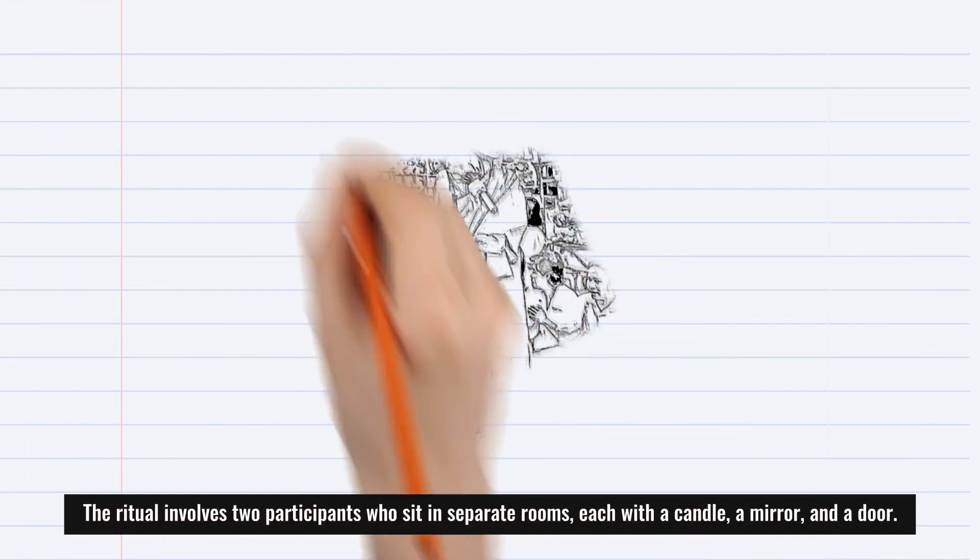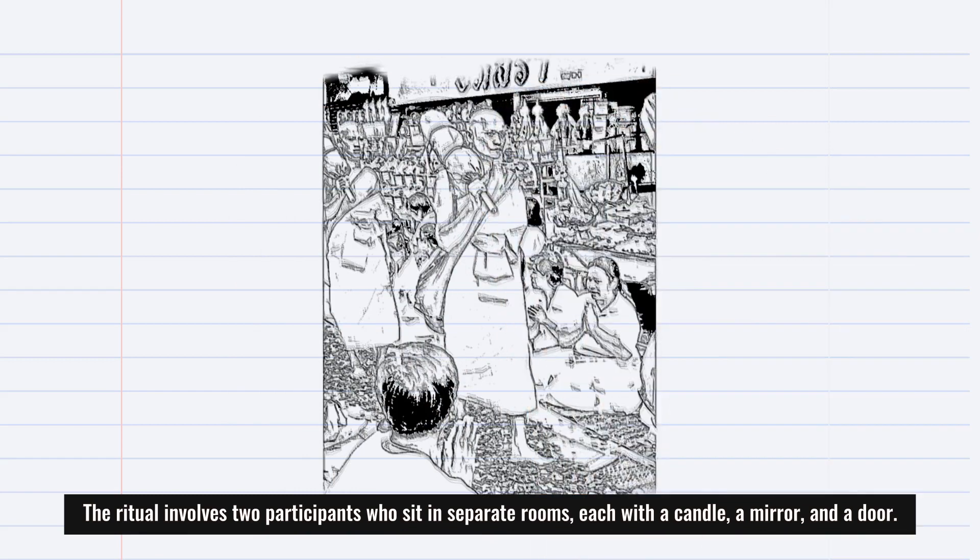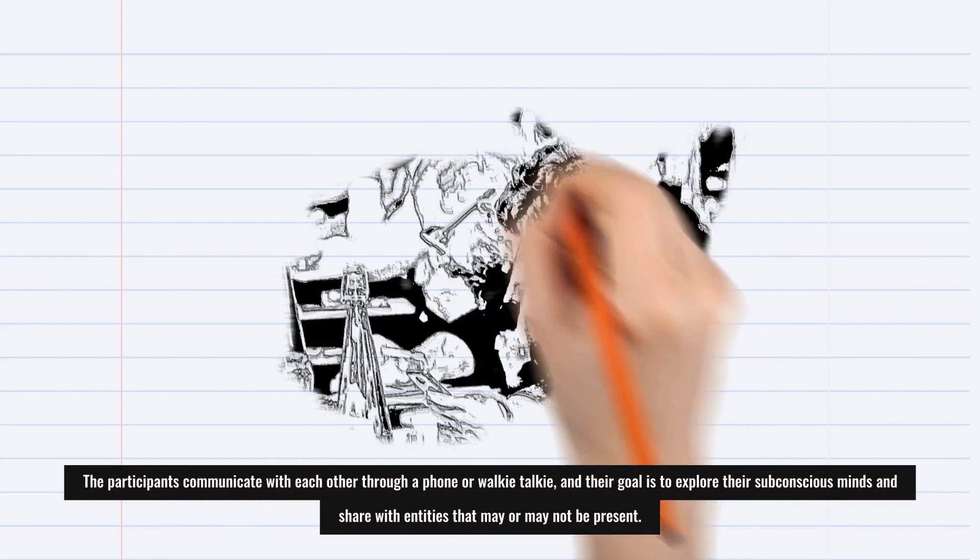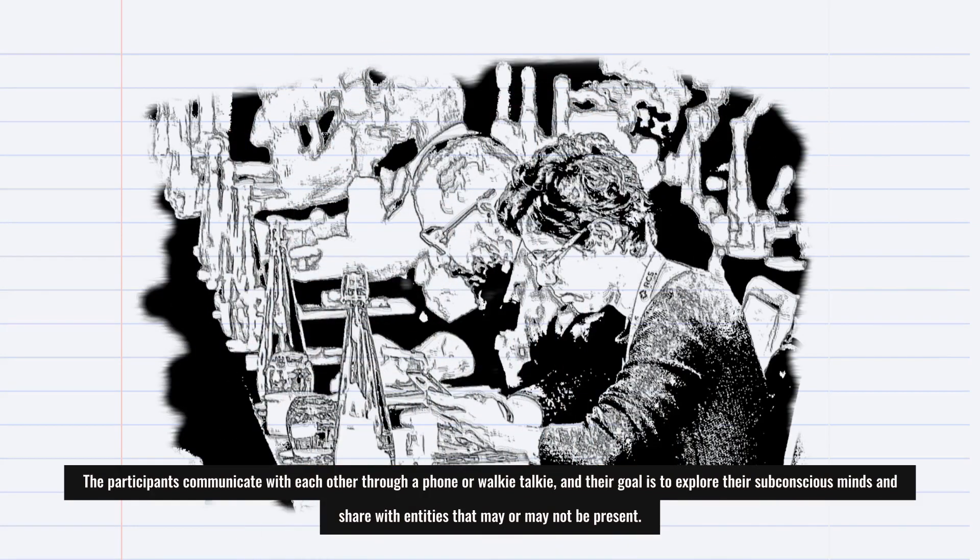The ritual involves two participants who sit in separate rooms, each with a candle, a mirror, and a door. The participants communicate with each other through a phone or walkie-talkie, and their goal is to explore their subconscious minds and share with entities that may or may not be present.